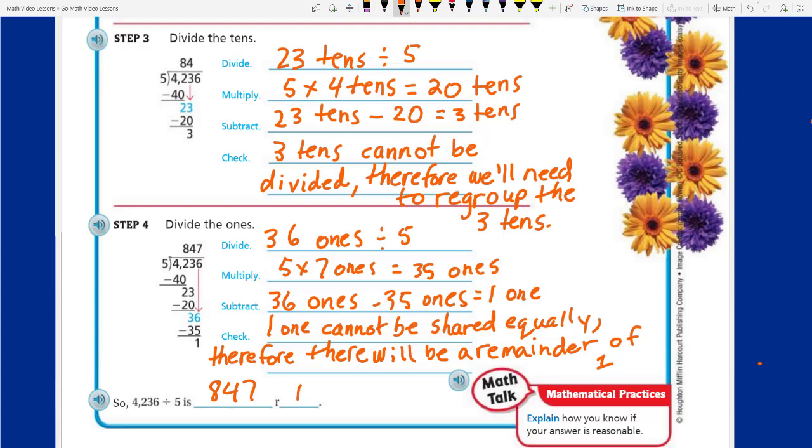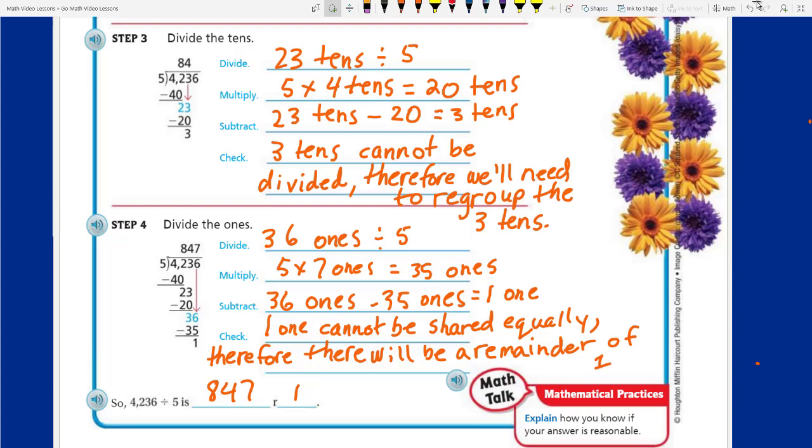Step three, divide the tens. We had the 800s from the last step. We subtracted the 40 hundreds. We ended up with 2 hundreds, which we couldn't regroup. So we brought down the 3 tens as indicated by that red arrow. And now we have 23 tens. We say there's 23 tens because 2 hundreds is the same as 20 tens. Then we have 3 tens that we added on. 23 tens can be shared. This is what we need to write down here. We're going to be dividing the 23 tens by our divisor again, by five. We're going to multiply. Well, they've already put the 4 up there for us. So we're going to actually take the 5, multiply that by the 4. And remember tens. 5 times 4 tens equals 20 tens. Now we subtract. So we're going to subtract our 23 tens that we had. They already put the 4 above the tens place. So now we have 23 tens minus 20 tens equals 3 tens. Then it just says check. 3 tens cannot be divided. Therefore, we'll need to regroup the 3 tens.